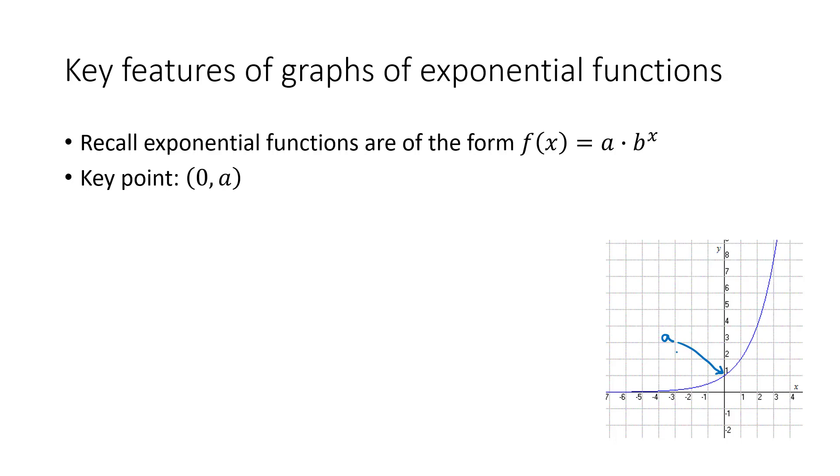We need one other key point to get an idea of the shape. That other key point that's easy to find is usually if we plug one in for x, because if we plug one in for x, we end up with a times b, and we can figure out what that value is. And so that value can be our second point, and it kind of tells us how the graph is going to bend or lay out.